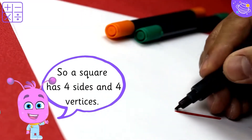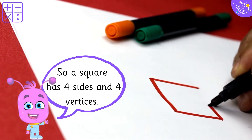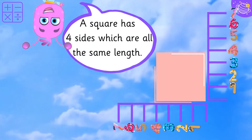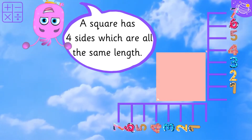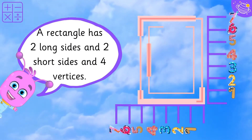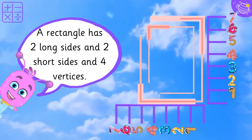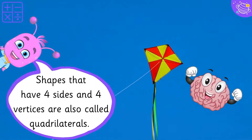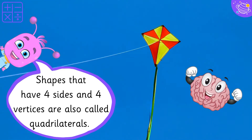A square has 4 sides and 4 vertices. A rectangle has 2 long sides and 2 short sides and 4 vertices. Shapes that have 4 sides and 4 vertices are also called quadrilaterals.